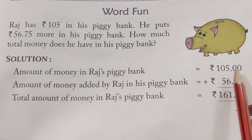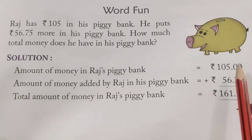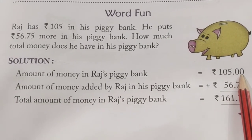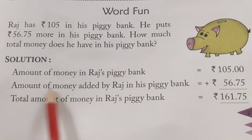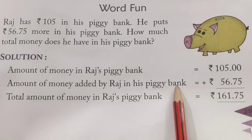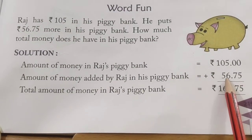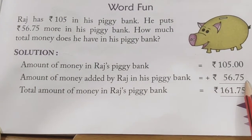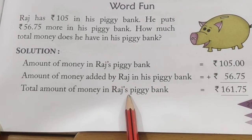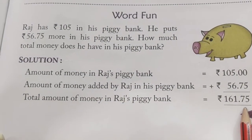Because we have not given paise, we have put a zero on that place. You have to remember that if paise is not given, you put a zero on that place. Then, the amount of money added by Raj in his piggy bank is 56.75. Now, to find the total amount of money, we will add — plus — and we will get the answer.